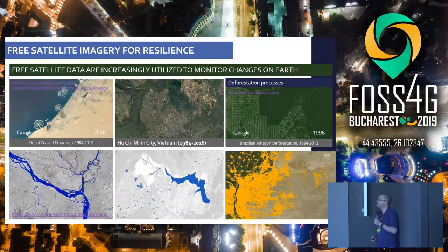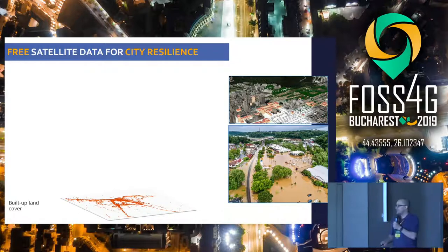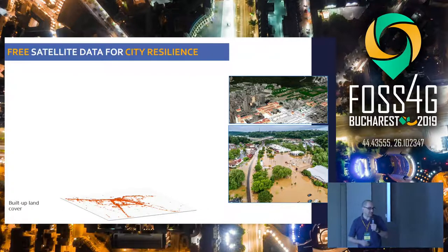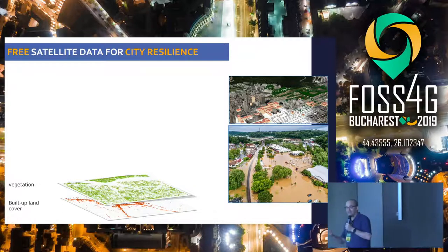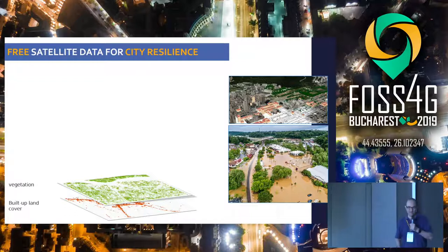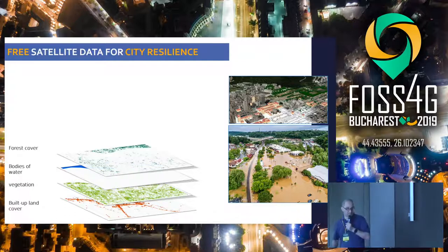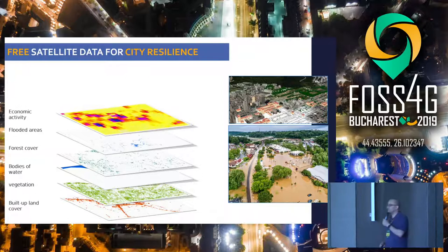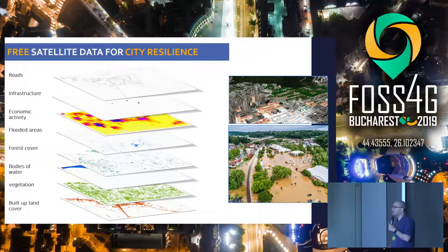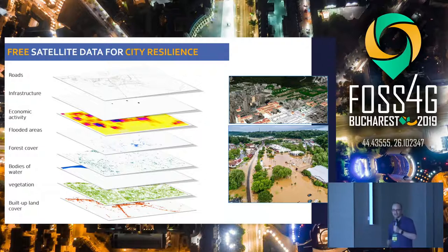These sources of free satellite data can be used for city resilience. For example, we can map built-up land cover in cities and see how cities expand, map green spaces and their relation to flood events, map bodies of water, forest cover and its relation to urbanization and deforestation, flooded areas during major events, economic activity using nighttime light data, and overlay all this with infrastructure and roads data.